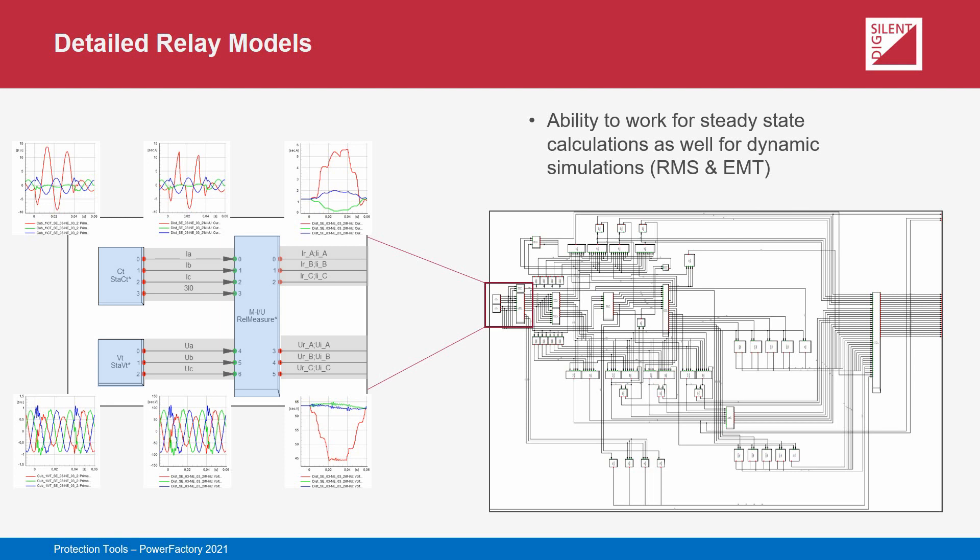For each block, the model class it represents has a set of signal names, with each signal having a specific definition. These definitions are detailed in a set of technical reference documents which are available within the software for each model class. Users can configure the measurement block according to their application. For example, the 1A or 5A current rating of the relay can be specified, as well as the sampling method. For blocks such as the time overcurrent block, settings such as the current threshold and time dial or time delay can be specified along with the used time overcurrent characteristic.